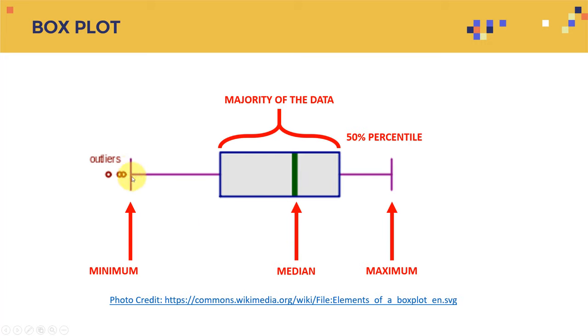For the box plots here, this line indicates the minimum value, this one indicates the maximum value. Here we have the median here, and this rectangle indicates the majority of the data. So 50 percentile will be here. And any data here indicates the outliers. These are the outliers that we highly likely are going to remove from the data, because these screw up the machine learning algorithms.